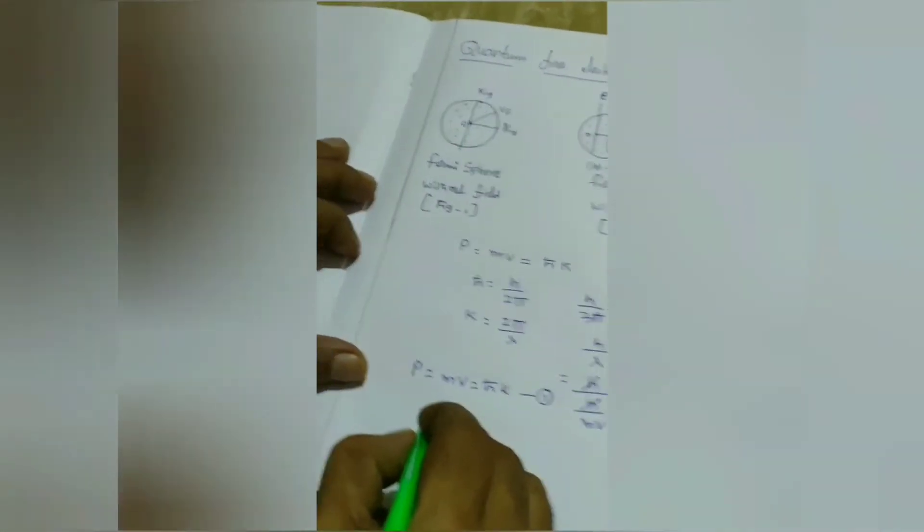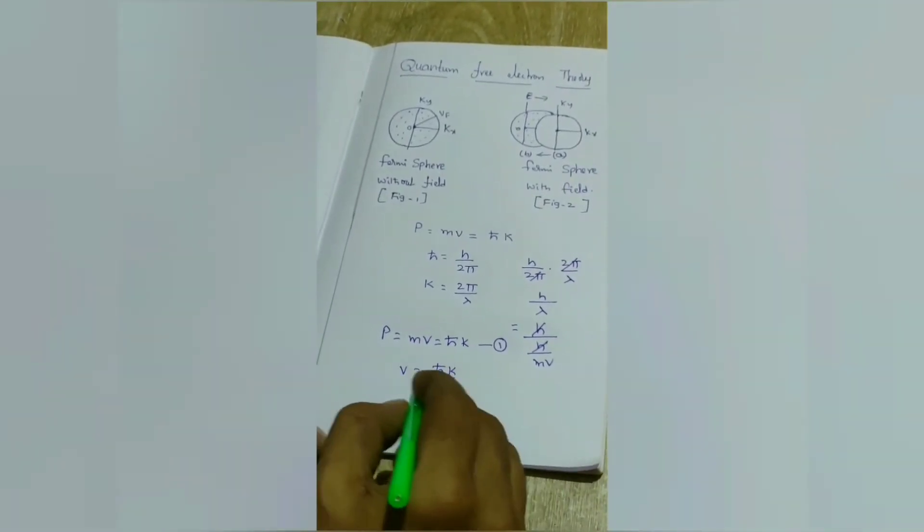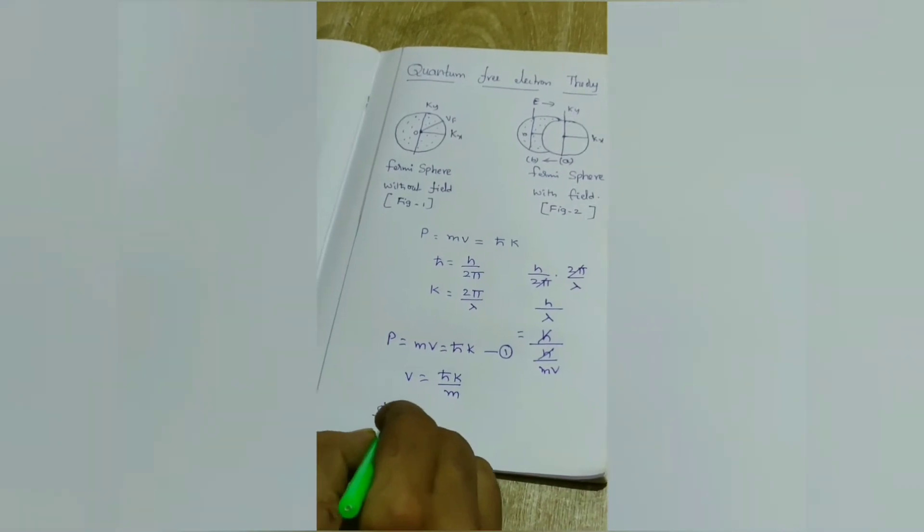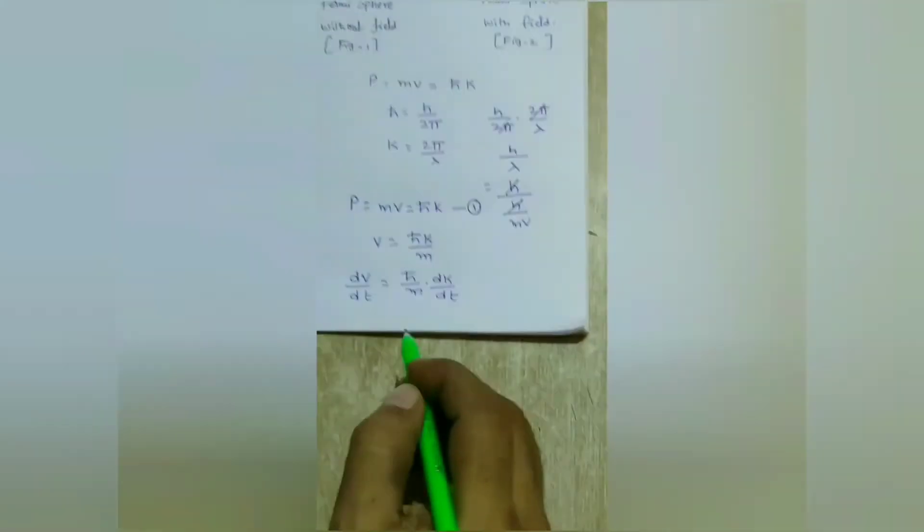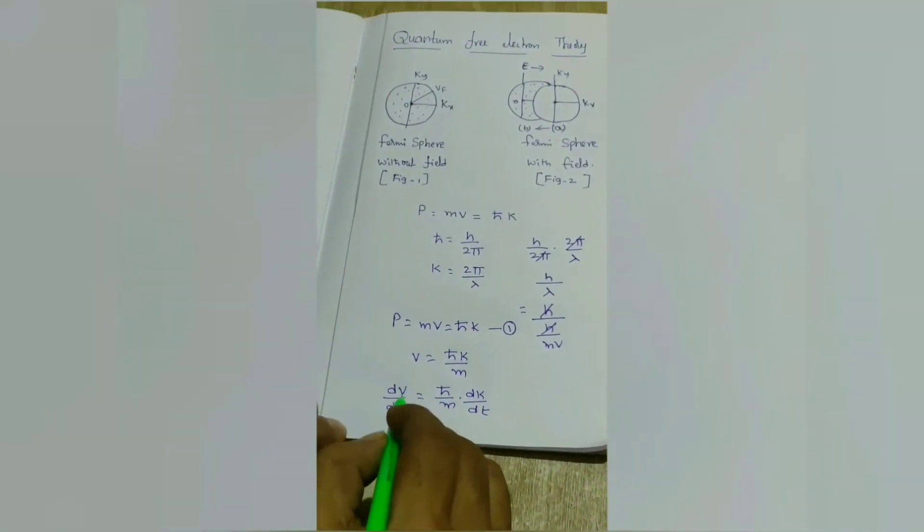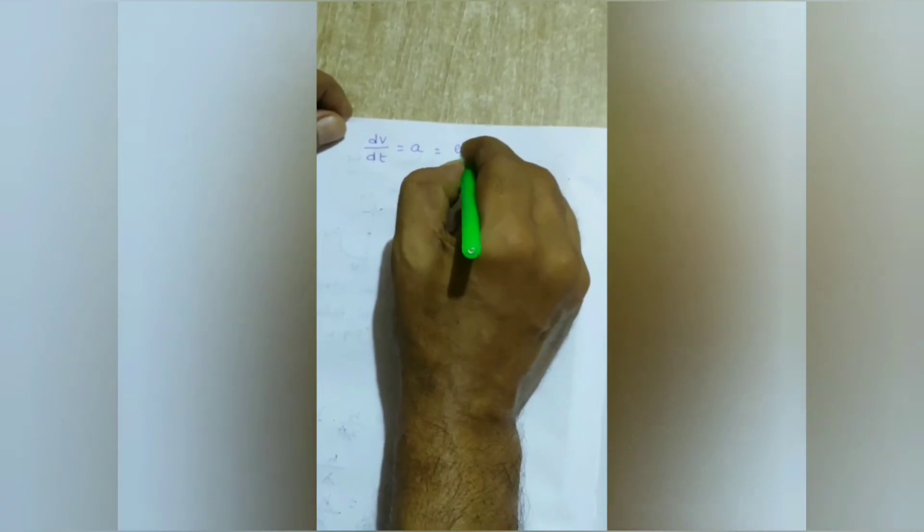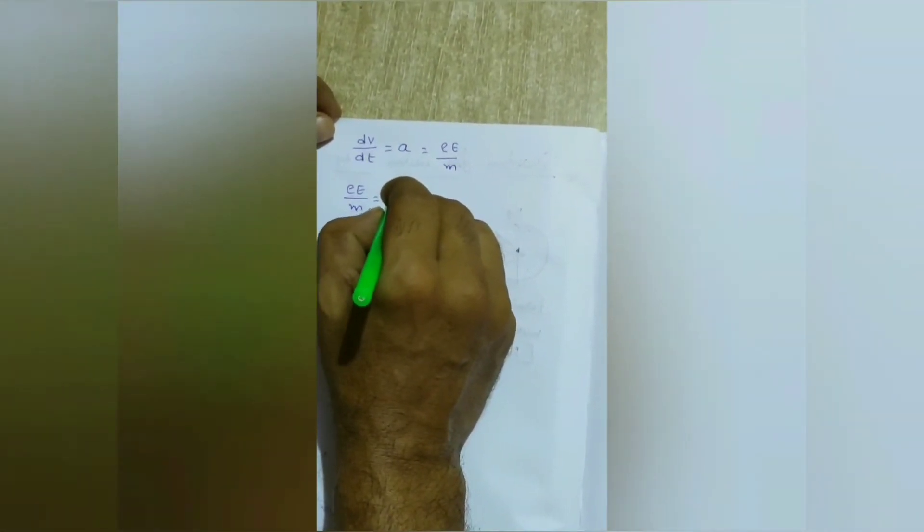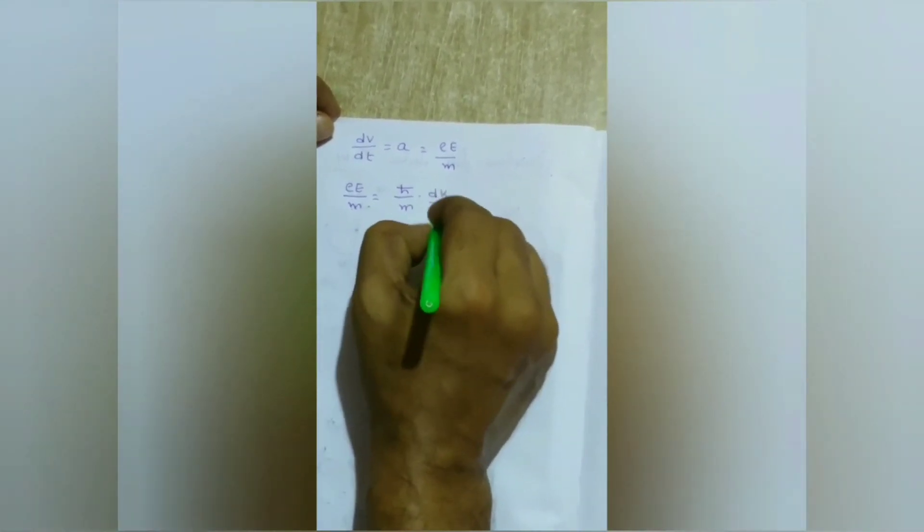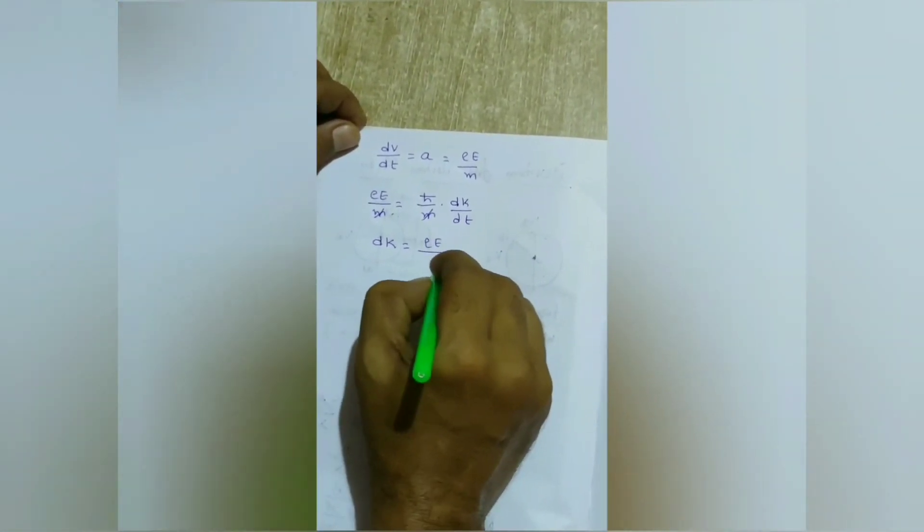From this equation, v = ℏk/m. Differentiating with respect to t, dv/dt = (ℏ/m) dk/dt. In this equation, this is known as rate of change of velocity. Therefore, dv/dt = a = eE/m. Then, eE/m = (ℏ/m) dk/dt. Simplifying, we get dk = (eE/ℏ) dt.